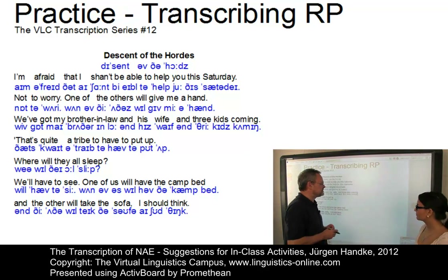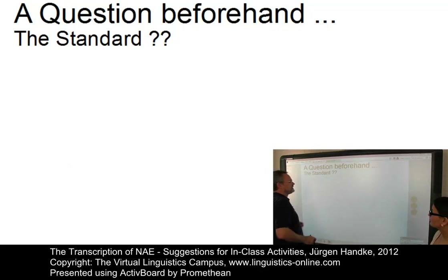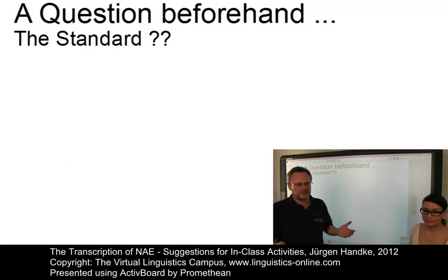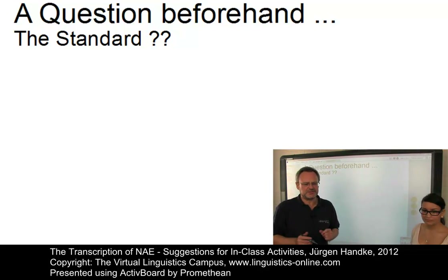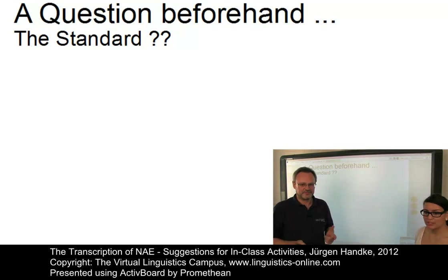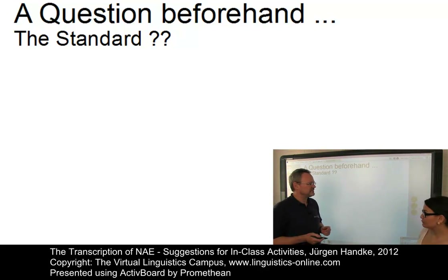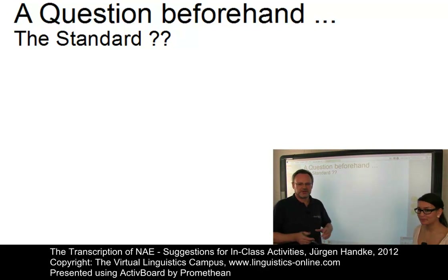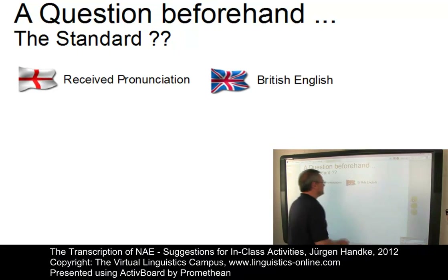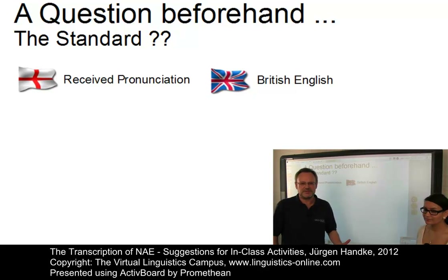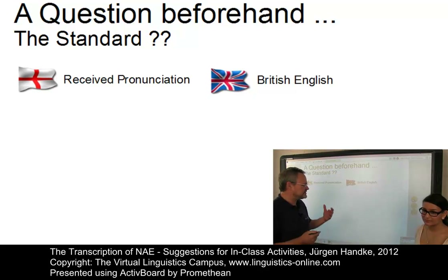Before we start with the discussion of North American English, we have to sort out a very essential question: the question of the standard. What are the reference varieties for English, first of all in the British context? There is British English as a head term for the orthographical and grammatical standard, and Received Pronunciation for the reference accent of English used in Britain.